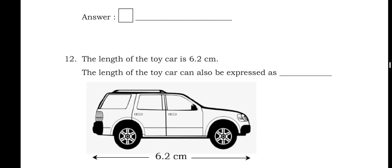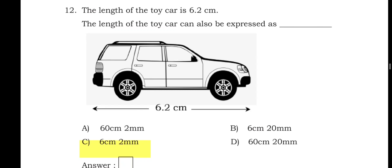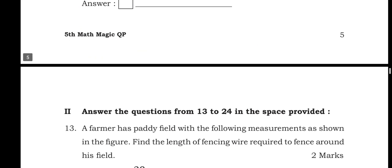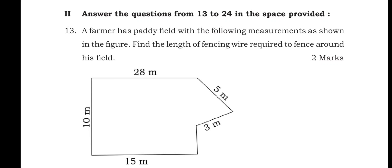Question 12: the length of the toy car is 6.2 cm. The options are: 60 cm 2 mm, 6 cm 20 mm, 6 cm 2 mm, or 60 cm 20 mm. The right answer is 6 centimeters and 2 millimeters. Option C is the right answer.